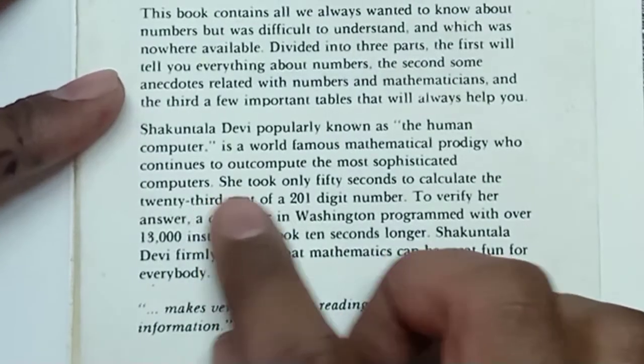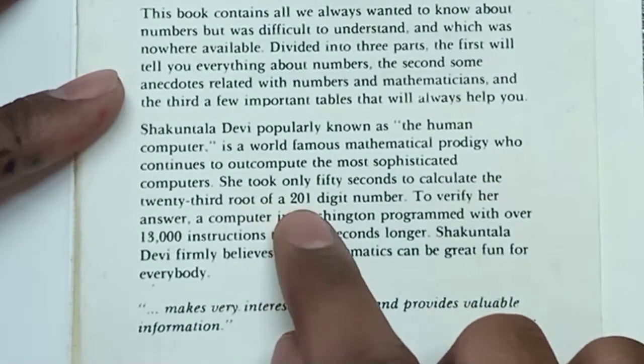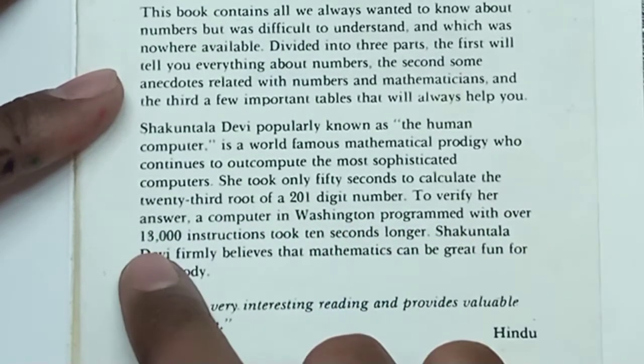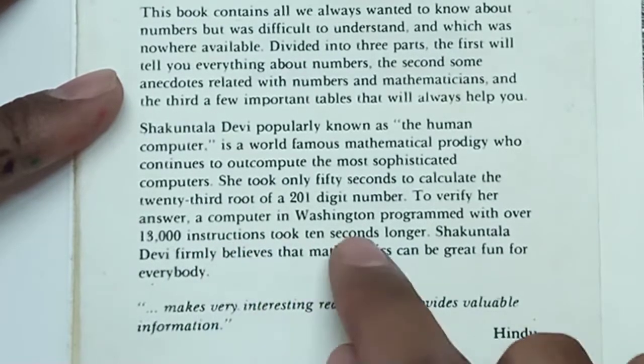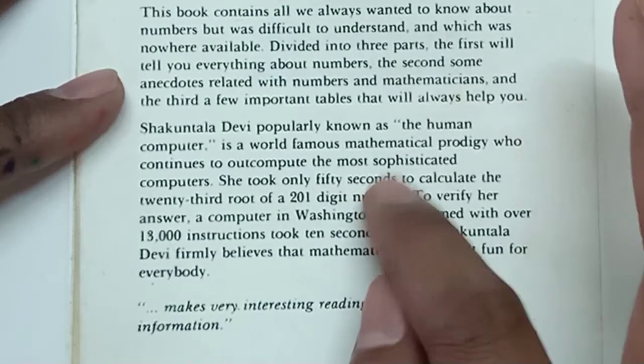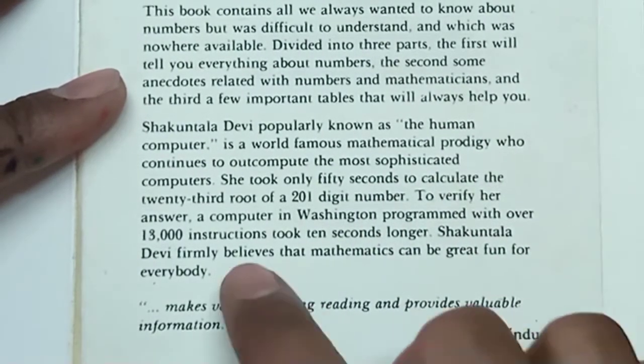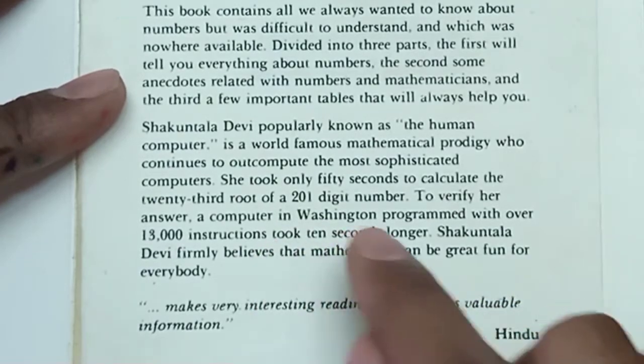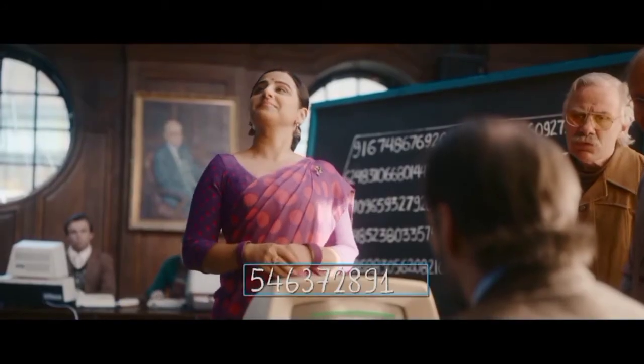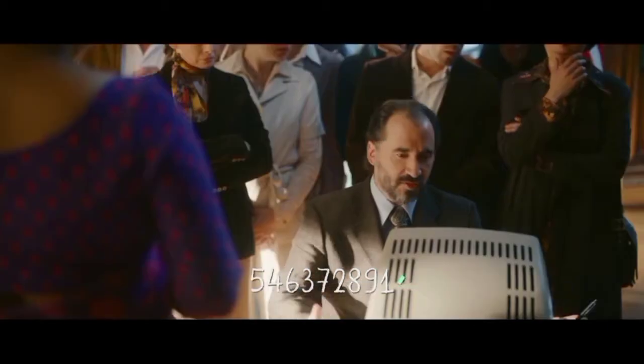In the very first page you can see this clearly: she took only 50 seconds to calculate the 23rd root of a 201-digit number. To verify her answer, a computer in Washington programmed with over 13,000 instructions took 10 seconds longer. She gave the answer in just 50 seconds. The computer that was verifying her answer took 60 seconds - 10 to 12 seconds longer. The computer is still calculating. The computer got it in 62 seconds - she's right.